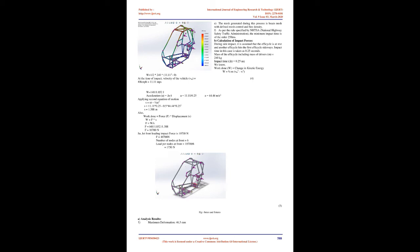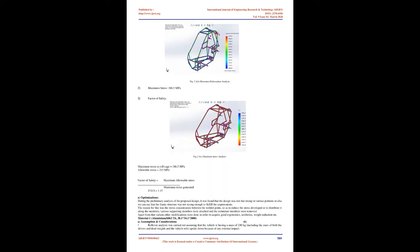Optimizations: During the preliminary analysis of the proposed design, it was found that the design was not strong enough in various portions. The reason was stress concentration between the welded joints. To reduce or distribute the stress along the members, various supporting members were attached and redundant members were removed. Additional modifications were made for good ergonomics, aesthetics, and weight reduction.